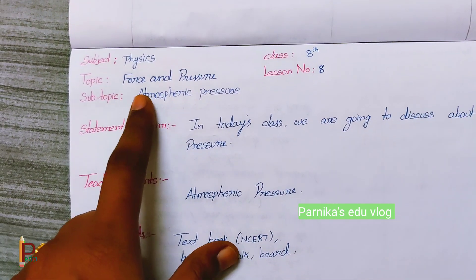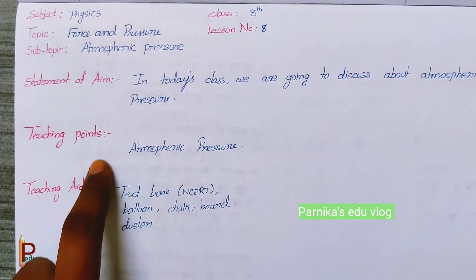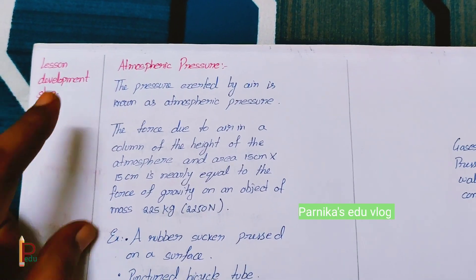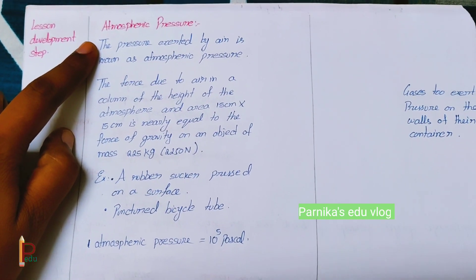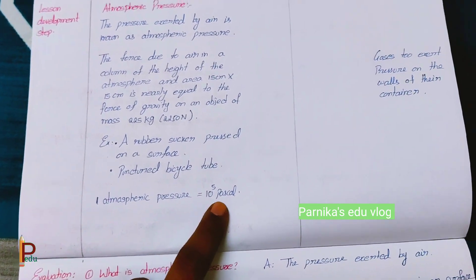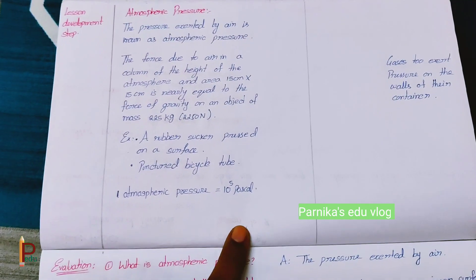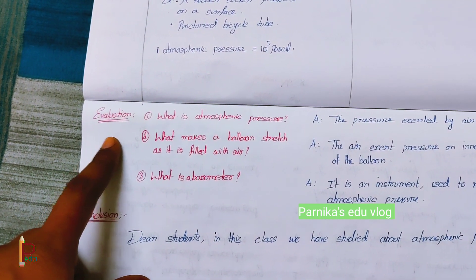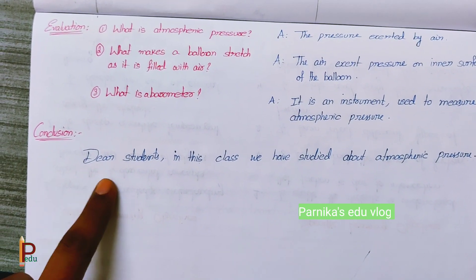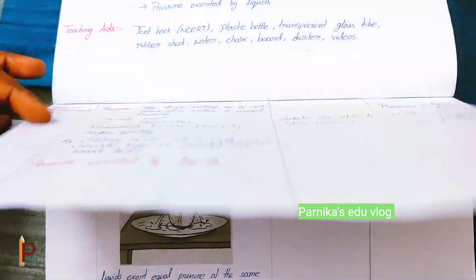And our last topic is atmospheric pressure. Statement of aim, teaching points, and teaching aids. Lesson development step — in this, first we have to tell what is atmosphere and what is atmospheric pressure, along with a few examples. One atmospheric pressure is equal to 10 to the power 5 Pascal — these are must and should be told to them. Coming to the evaluation — these are the questions we need to ask. And finally we can end this chapter by concluding. This is all about how to write a lesson plan for force and pressure. Thank you.